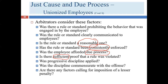Progressive discipline is definitely something arbitrators look to see, though not every violation calls for it — theft of significant value or significant assault, for example, may not be appropriate for progressive discipline. The arbitrator's likely perspective is that termination is the death penalty: this person may never economically recover from the loss, so the offense has to be very grave for that to be considered a reasonable consequence.